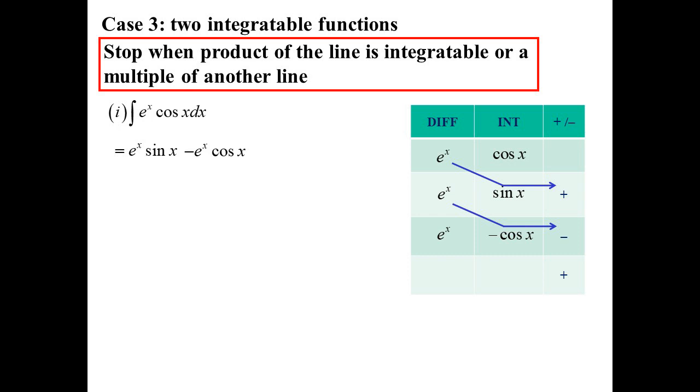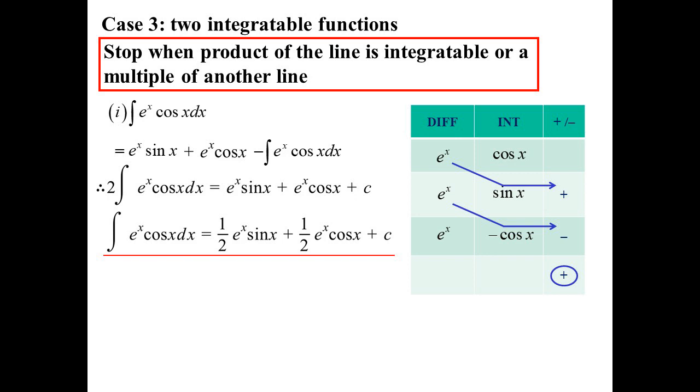So I'll go minus minus becomes plus. But then it'll now be plus the integral of that line, which is minus. So I've got minus e to the X cos X. I can move that to the other side. And have the answer.